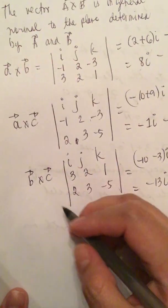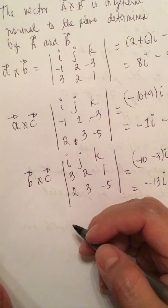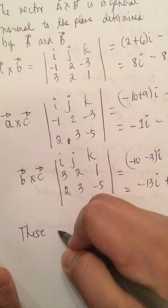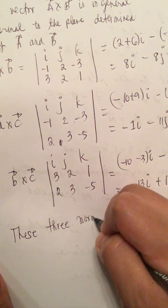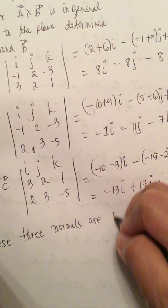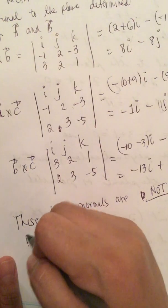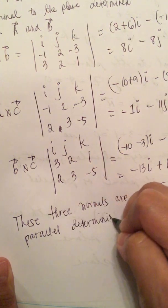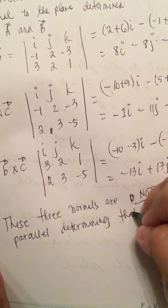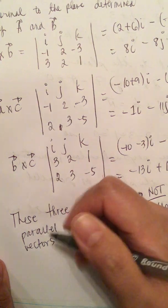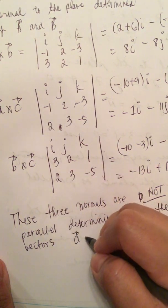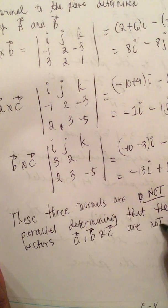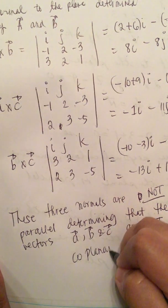These three normals are not parallel, determining that the vectors A, B, and C are not coplanar.